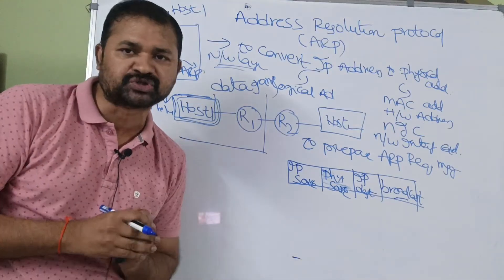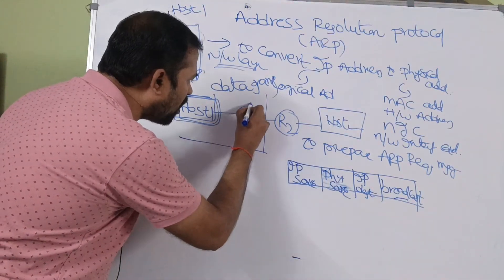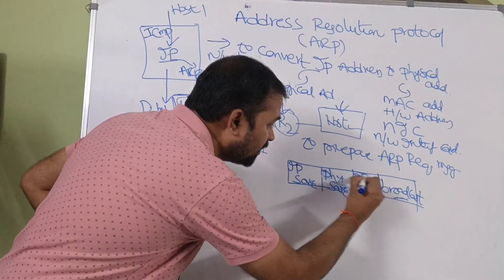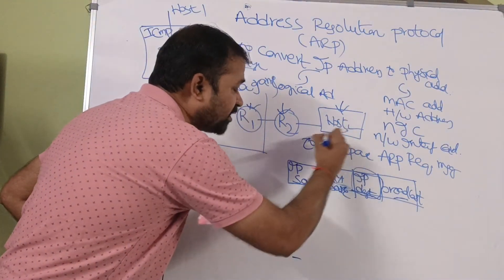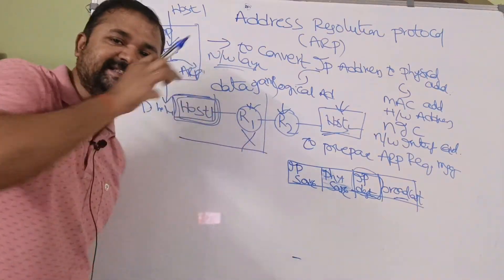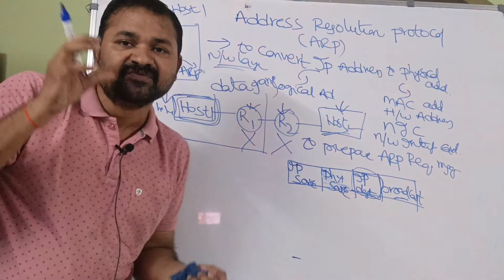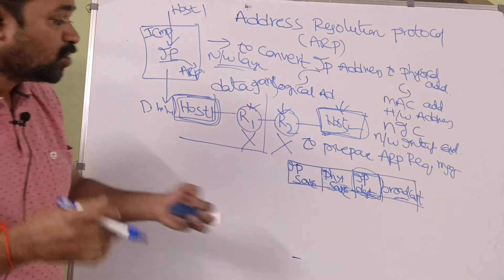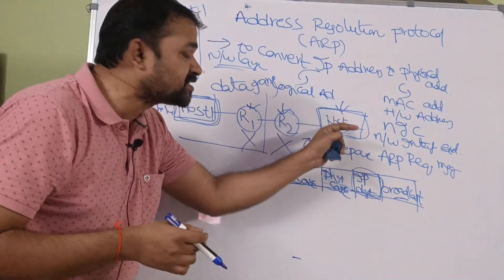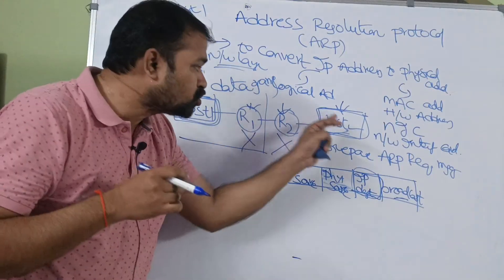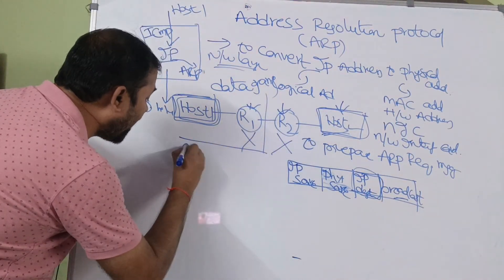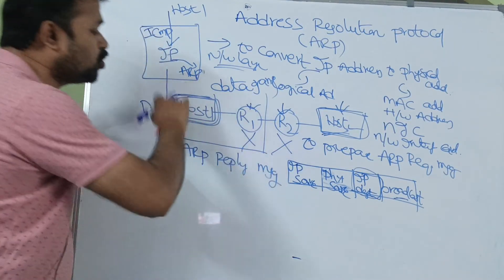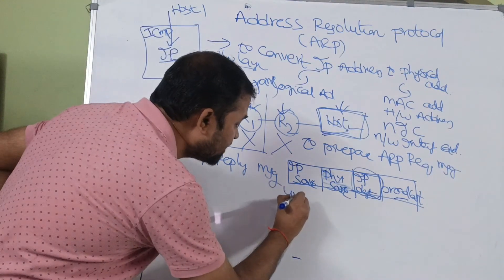Since the request contains the destination IP address of host 2, router R1 and router R2 will simply reject that message. Only host 2 will accept the message, because its IP address matches the destination IP in the request. Host 2 will then provide an ARP reply message back to host 1, using a unicast address.